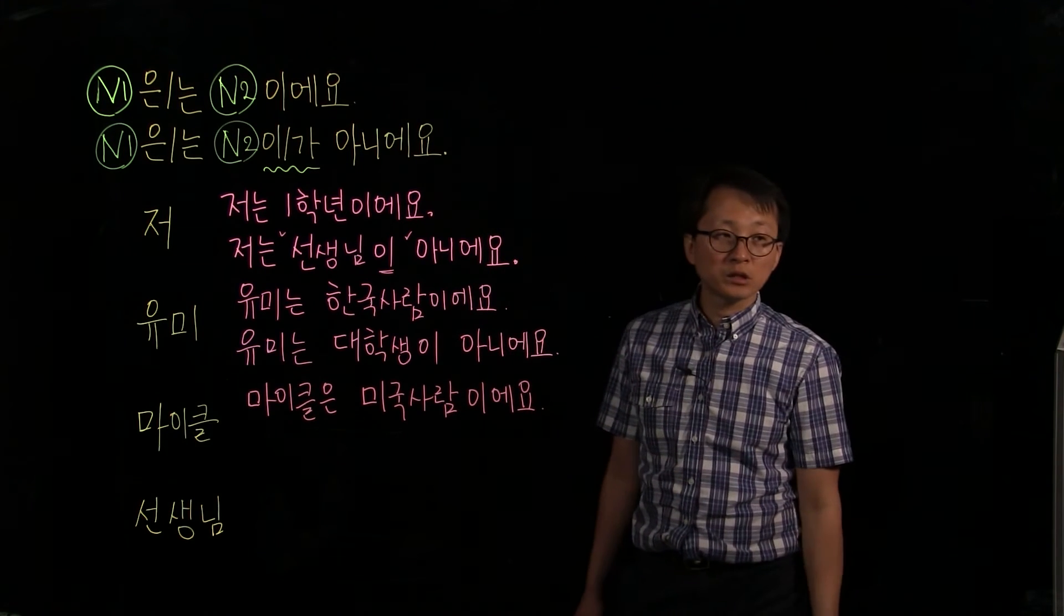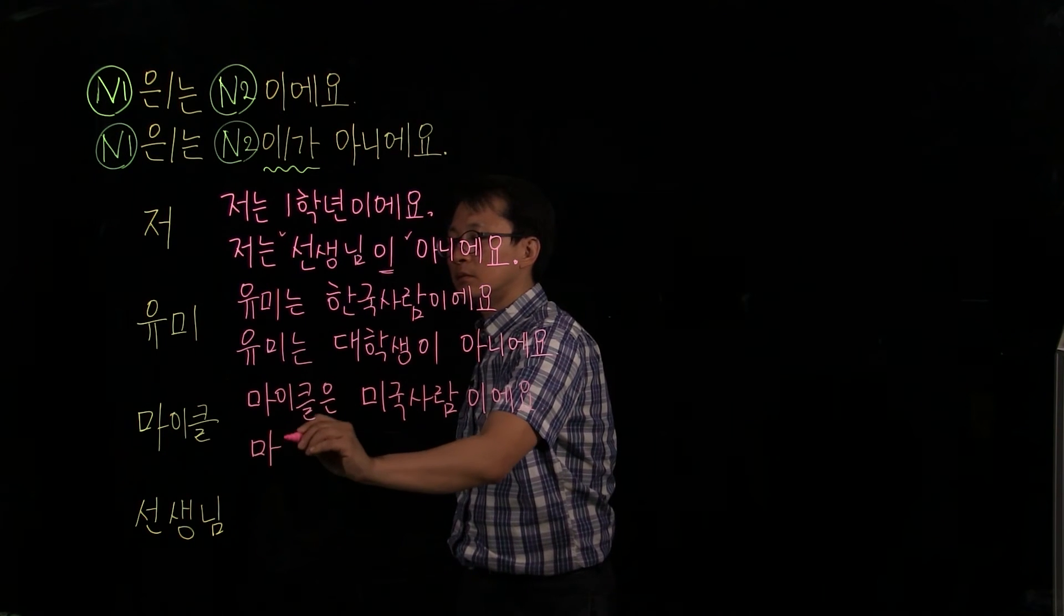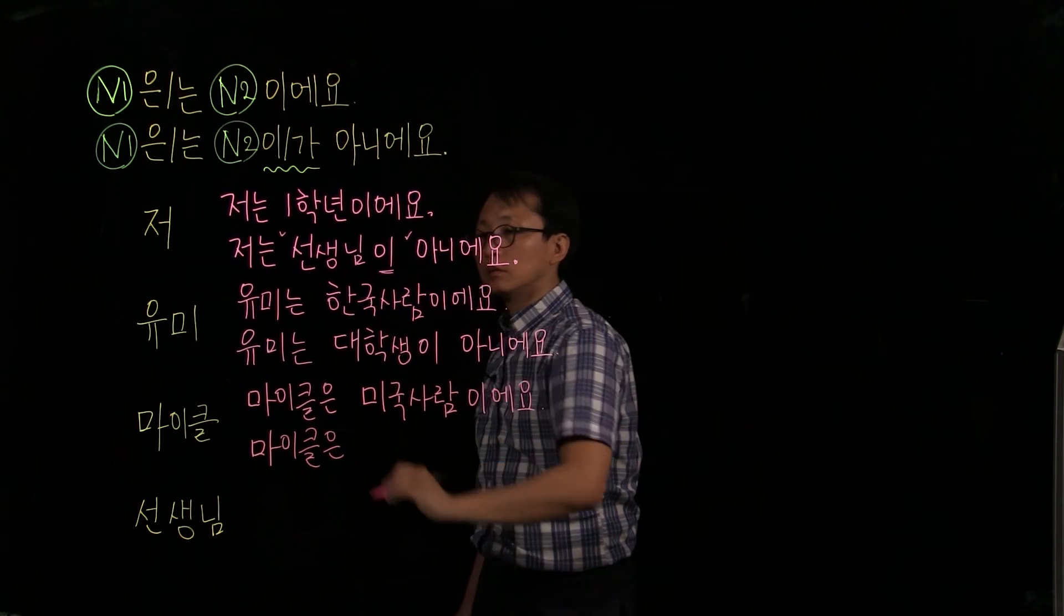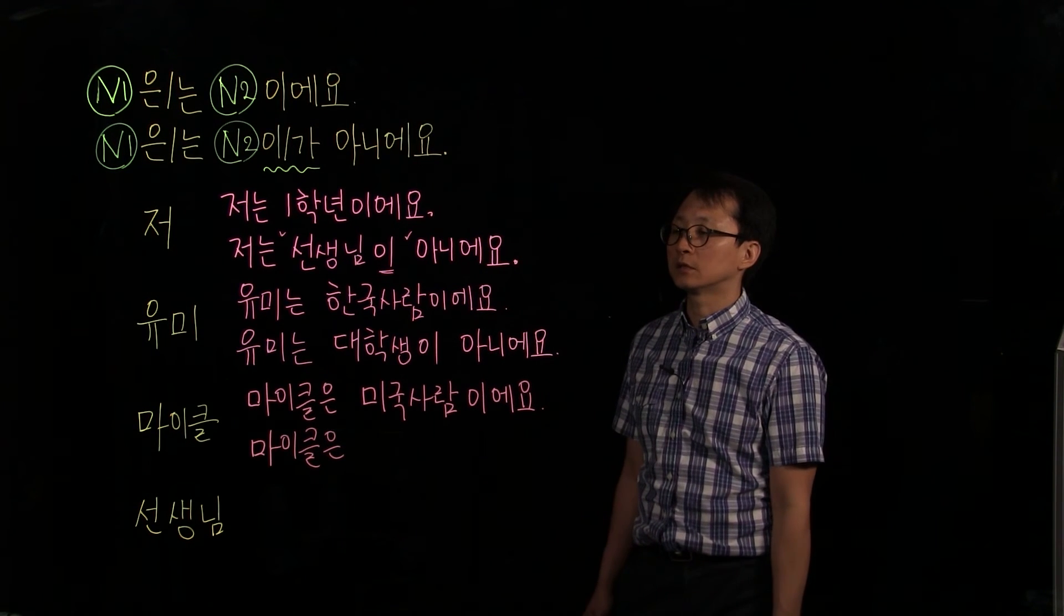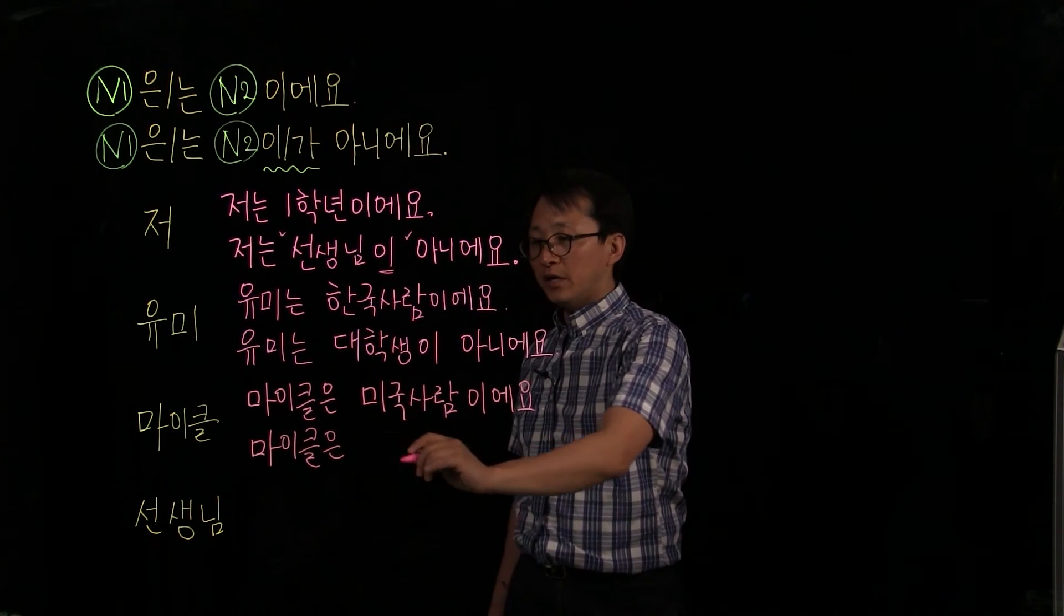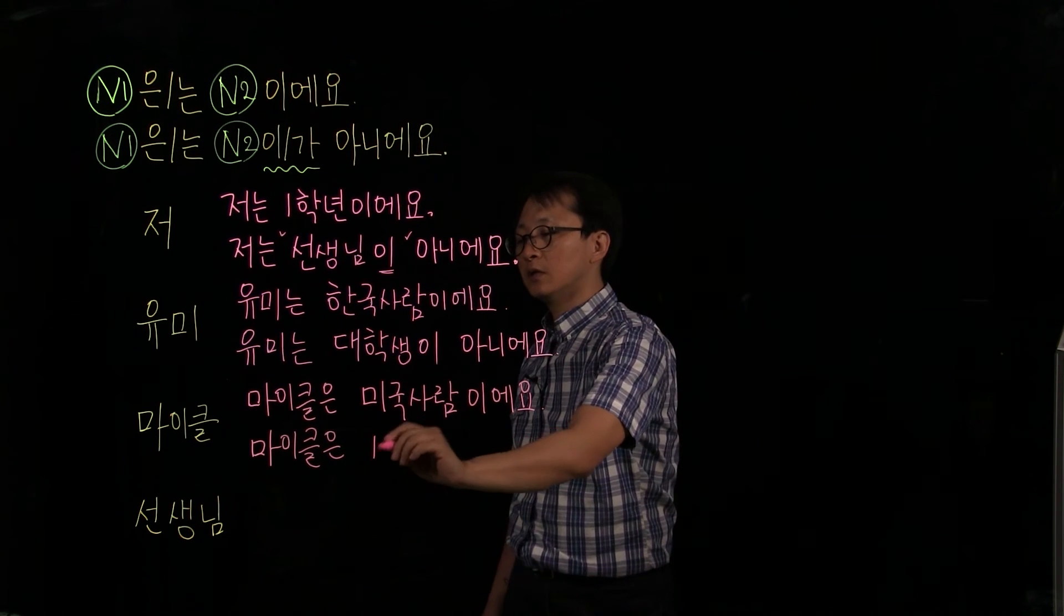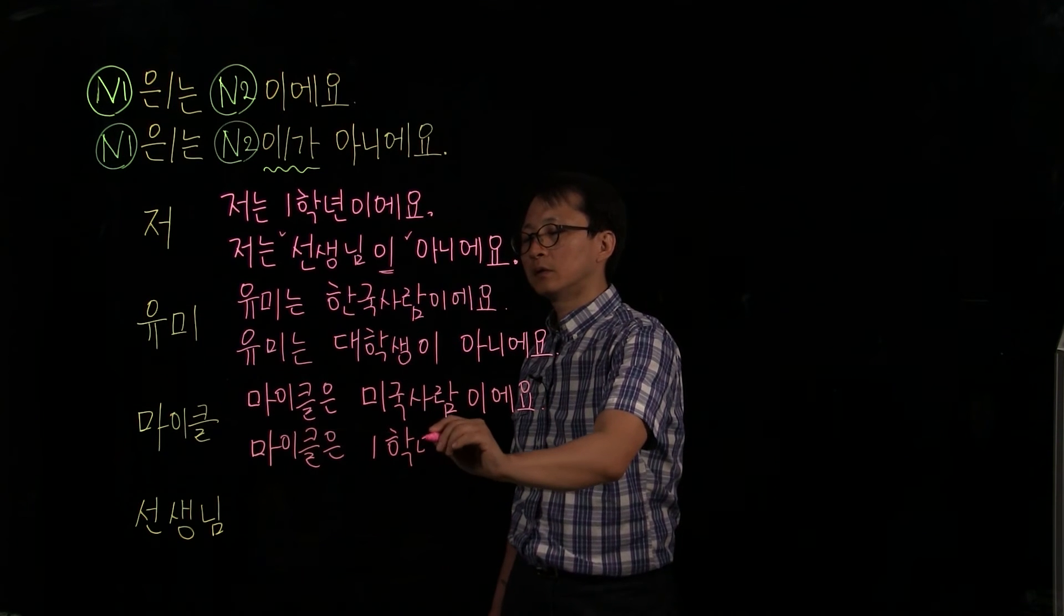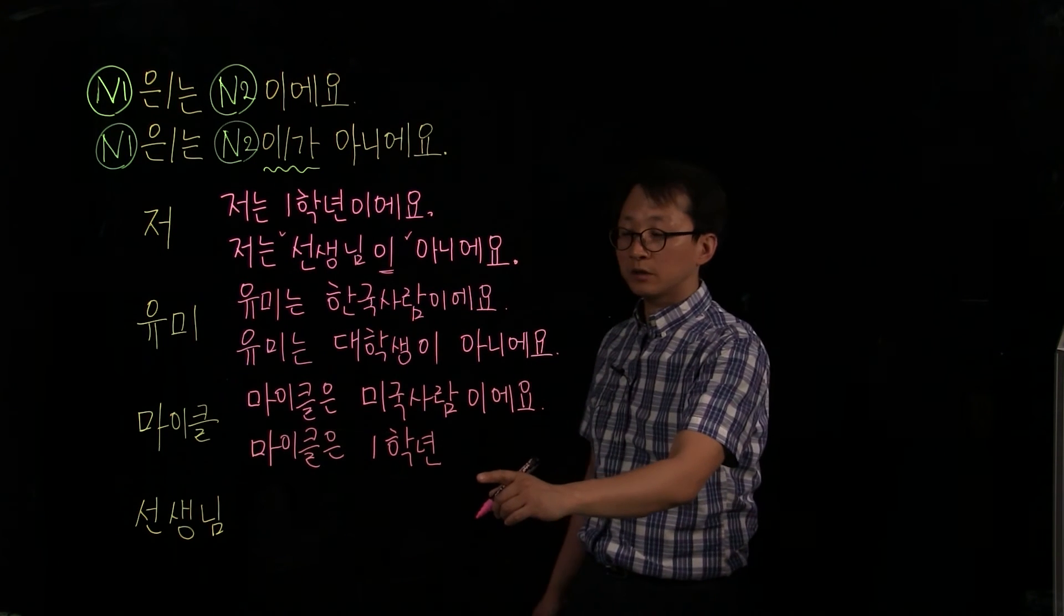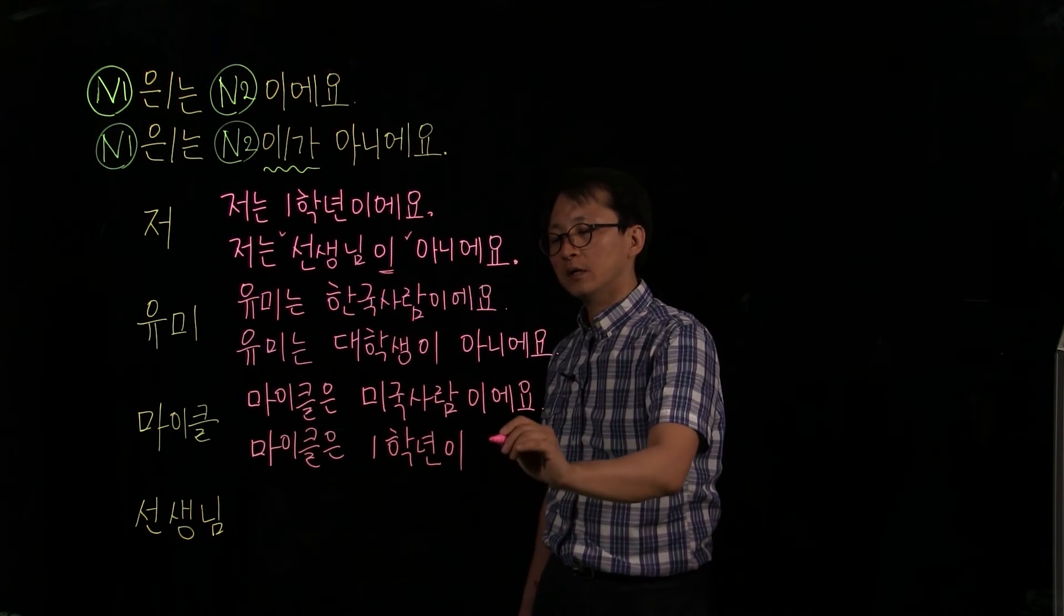Let's say what he is not. 마이클은, 마이클은. How do you say this at this time? Let me just say he is not a freshman. So 일학년. And what particle do we need? But for negative sentence, we need a particle after this second noun. 일학년이 아니에요.